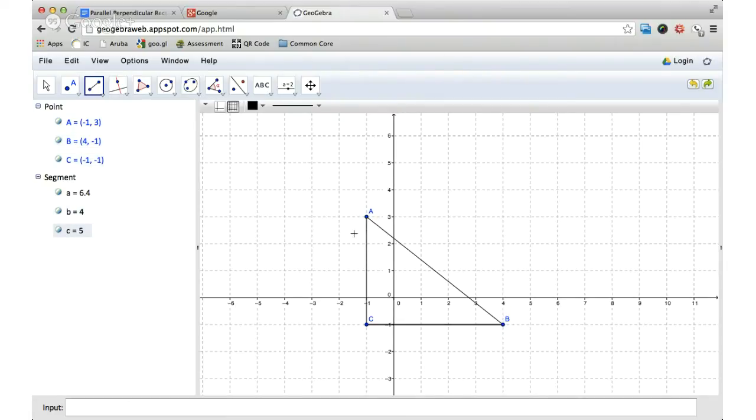And it even tells me here, look at this, for this segment right there, it says that's four units long. And I could even look at it going from three down to negative one, and that would tell me how far that is. It's four units long. The other one is five units long.